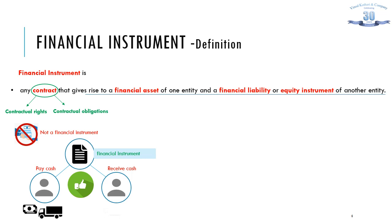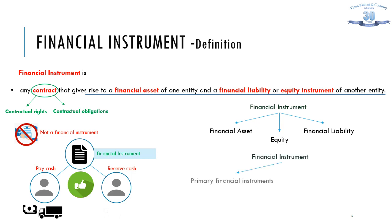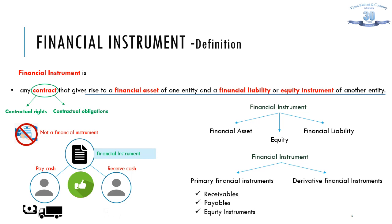A financial instrument is a contract that gives rise to a financial asset of one entity and a financial liability or equity instrument of another entity. From a journal entry standpoint, if something gets debited, another gets credited. Financial instruments include financial assets, financial liabilities and equity. They can also be segregated into primary financial instruments like receivables, payables and equity instruments, and derivative financial instruments like financial options, futures, forwards and interest rate swaps.